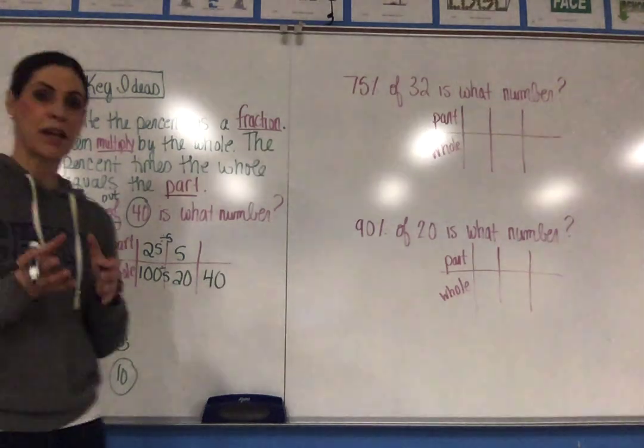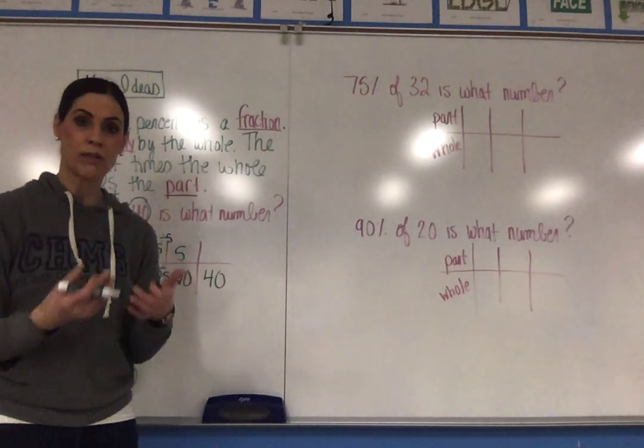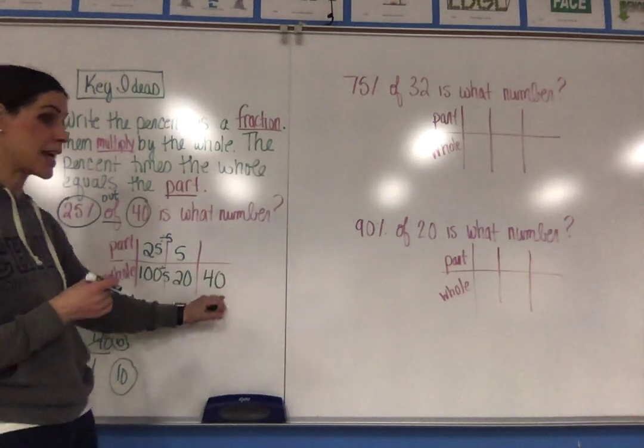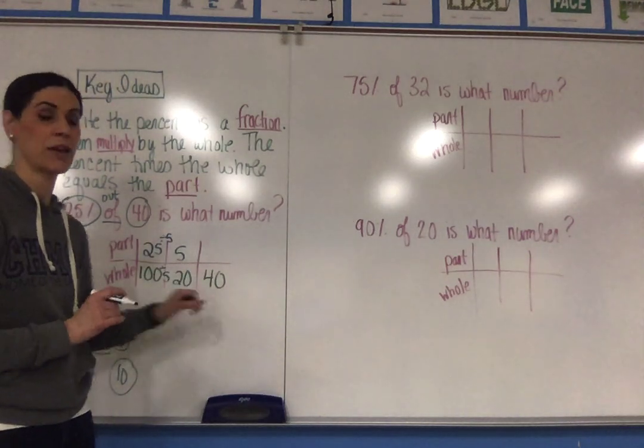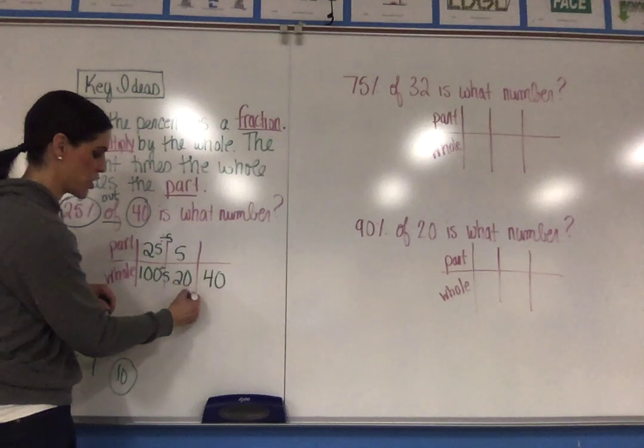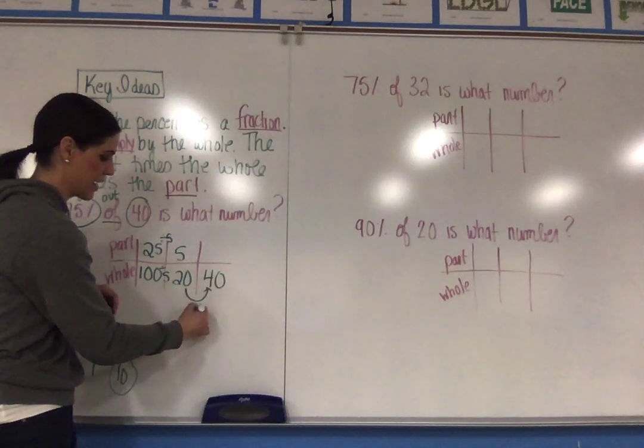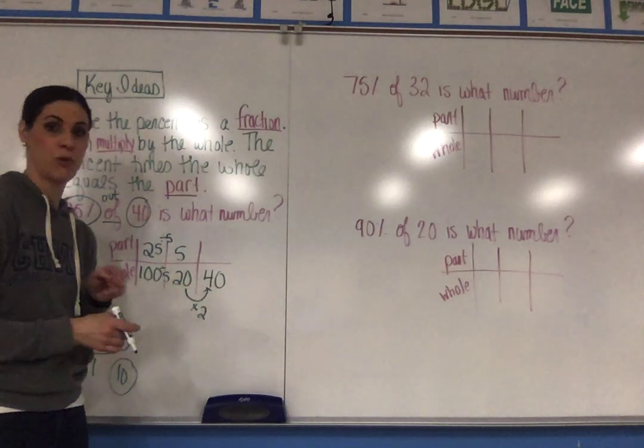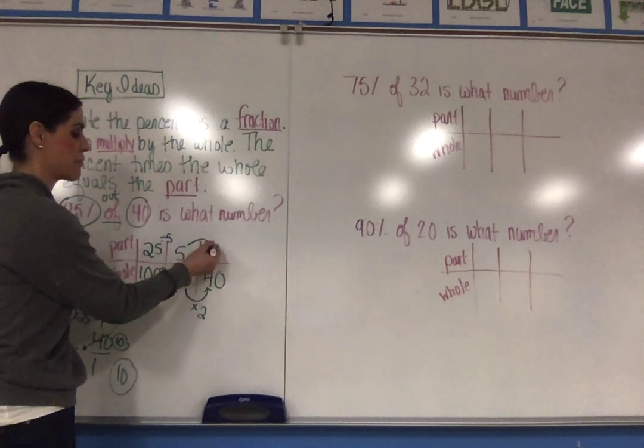I want you to see that we are basically making equivalent fractions so that we get an equivalent fraction with the denominator of 40. Then I can see that if I multiply 20 times 2, I get 40. And I have to do the same thing to the part.